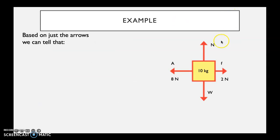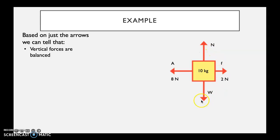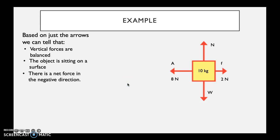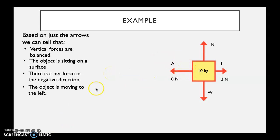Based on the arrows, I can tell the vertical forces are balanced because normal and weight are balanced. As a side note: any time the motion is horizontal, weight and normal will always be balanced; vertical forces only become unbalanced when motion is up and down. The object is sitting on a surface because of the normal force, the net force is in the negative direction, and the object is moving to the left because that is the direction of the applied force.